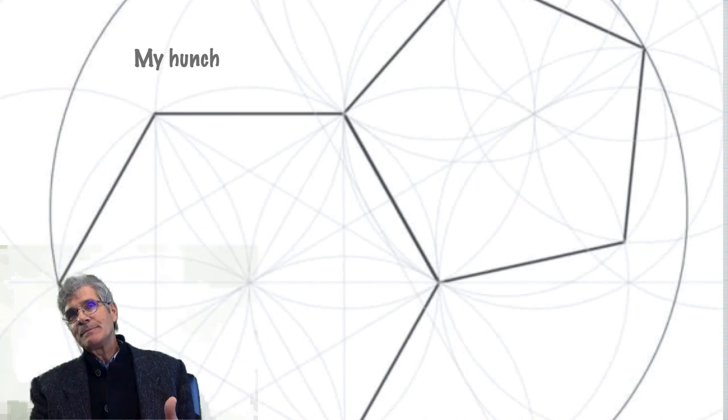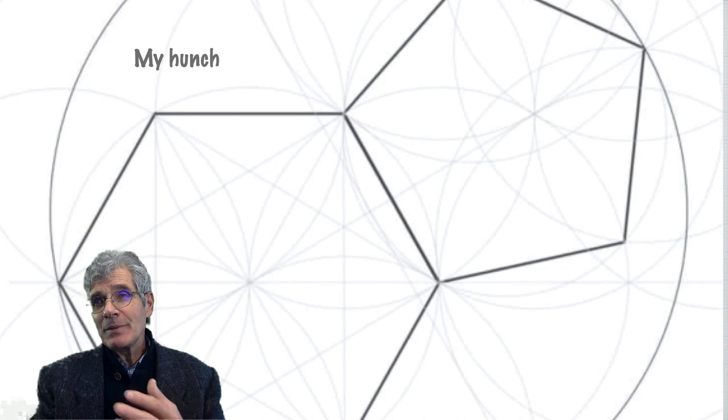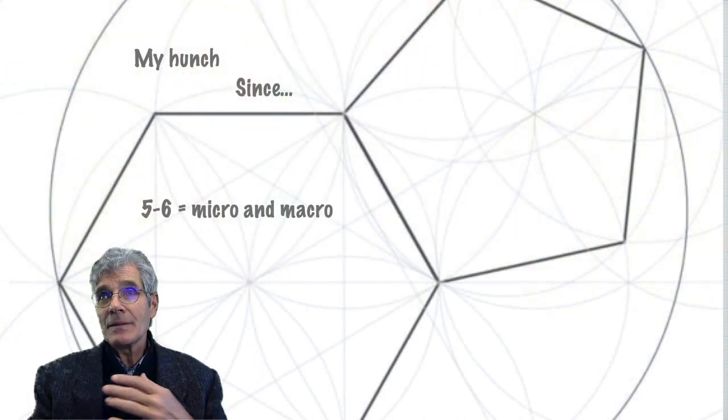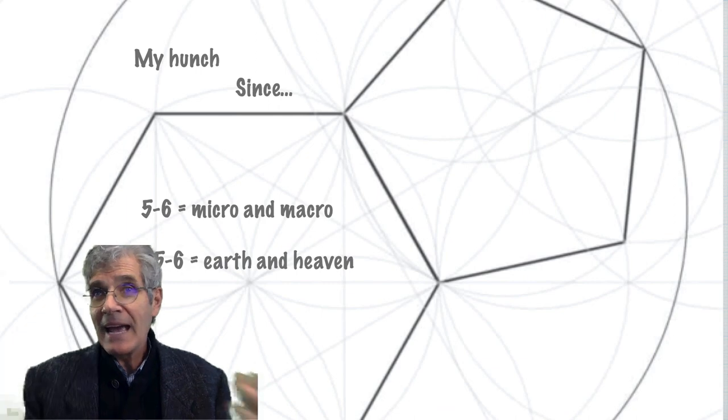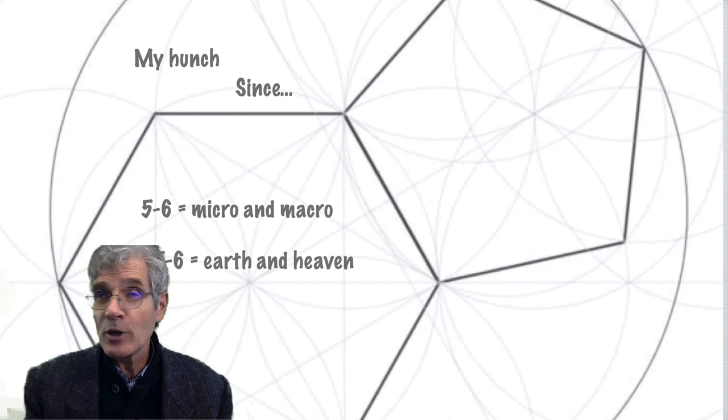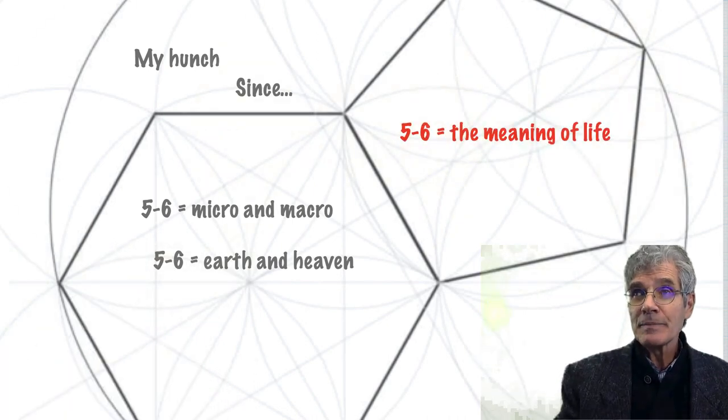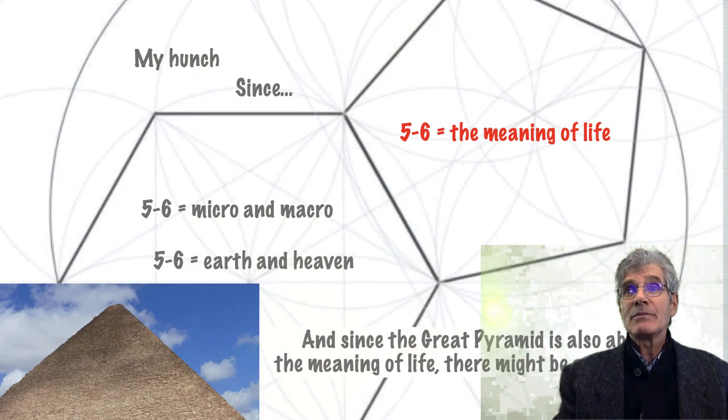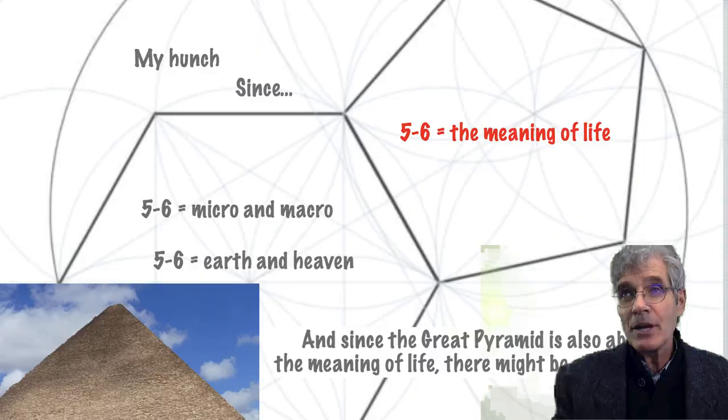So my hunch about this construction was that it would have something to do with the Great Pyramid, since the five and the six are the macro and the micro, and the Great Pyramid seems to be working in that realm. Heaven and Earth, five and six, the macrocosm and the microcosm, it's the merger of heaven and earth, and the Great Pyramid certainly seems to have to do with those two dimensions. And the meaning of life, and I've said the Great Pyramid for decades, believing it's got the meaning of life. And so since the Great Pyramid is about the meaning of life, there might be a connection between this. That has always been a hunch of mine.